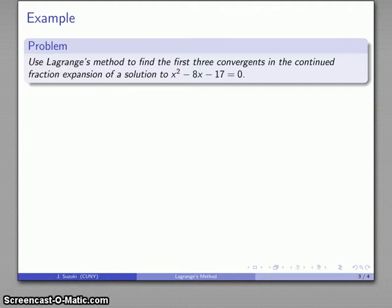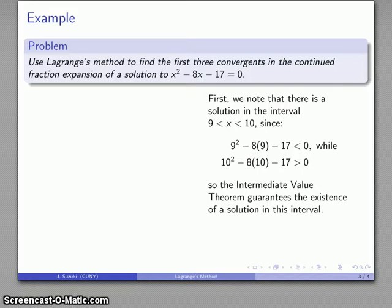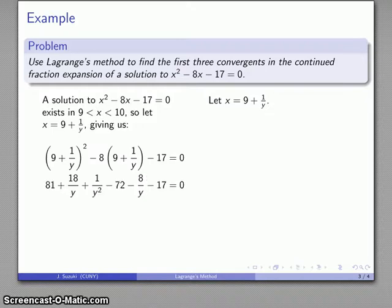For example, let's find the first three convergents in the continued fraction expansion of a quadratic equation. I'll note that there is a solution in the interval between 9 and 10 because if I substitute 9 I get something less than 0, and if I substitute 10 I get something greater than 0. The intermediate value theorem guarantees there is a solution in this interval. So I'll let x equal 9 plus some fractional amount, substitute, expand, collect, and simplify to get a new equation.